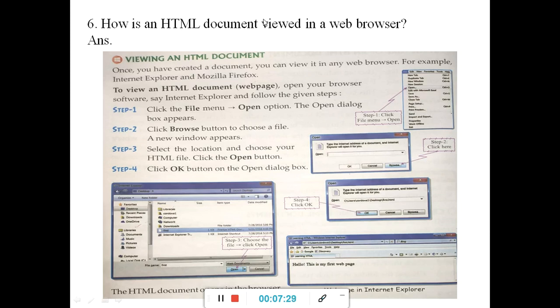Number 6: How is an HTML document viewed in a web browser? We have learned how to save it. When we save it, we have to give an extension .html. And now, how will you view that HTML document? To view, you have to open any one of the browsers, either Internet Explorer or Mozilla Firefox. Any one of the web browsers. If you are opening the Internet Explorer, how you will be viewing the HTML document? You have to click the file menu, open option. Then this open dialog box appears. Now step 2: click on this browse button to choose a file. This will open up this screen. Select the location from here and choose the HTML file and then click on open button. When you click on open button, this will appear. Click on the OK button. When you click the open button, whatever HTML document you have written, it will appear as a web page in Internet Explorer.